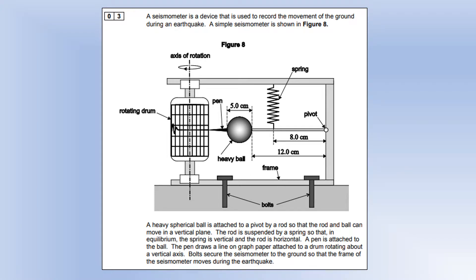Section B of the 2016 paper: we've got a seismometer used to monitor earthquakes. A heavy spherical ball is attached to a pivot by a rod, and the ball is free to move in a vertical plane. The rod is suspended by a spring so that in equilibrium, the spring is vertical and the rod is horizontal. The pen attached to the ball draws a line on graph paper attached to a rotating drum. Bolts secure the seismometer to the ground, so the frame moves during an earthquake.